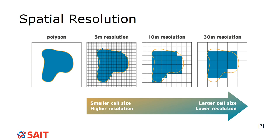Spatial resolution — you guys have seen this many times before. You talk about how many pixels something has. That used to be a really big deal back when digital cameras first came out, like having a 12 megapixel camera. Spatial resolution still is an issue because we need to know how much of the ground one pixel is covering.